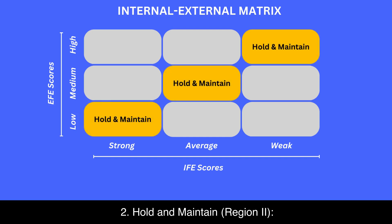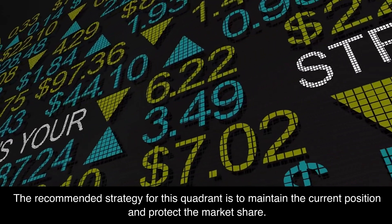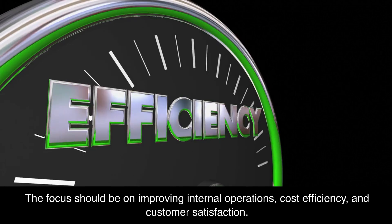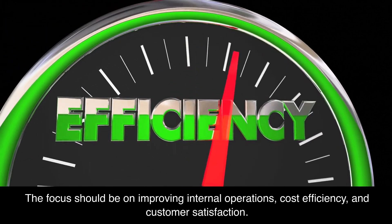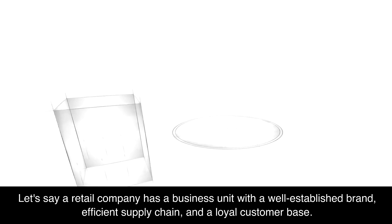Region two — hold and maintain: in this region we find business units with high internal scores but low external scores. These units have strong internal capabilities but face challenging external conditions. The recommended strategy for this quadrant is to maintain the current position and protect market share. The focus should be on improving internal operations, cost efficiency, and customer satisfaction. Additionally, it is essential to monitor the external environment closely for potential changes that could turn threats into opportunities.